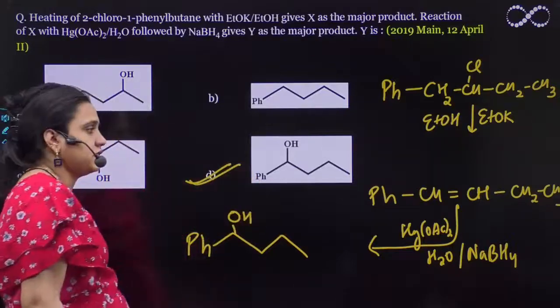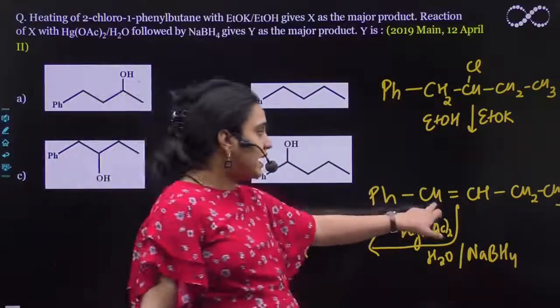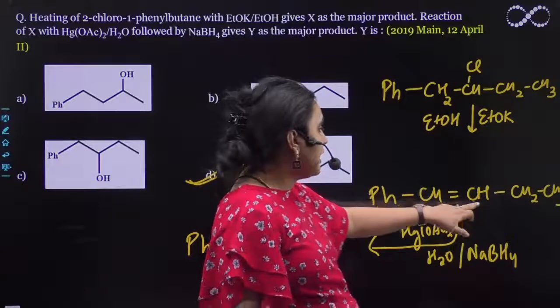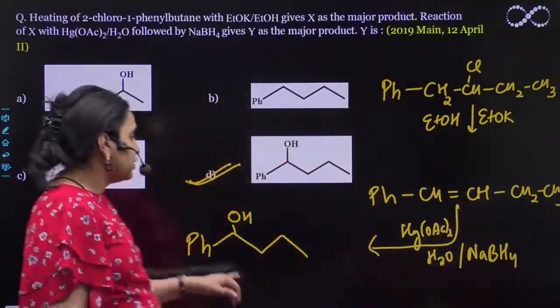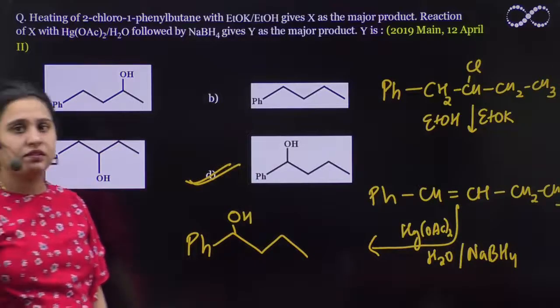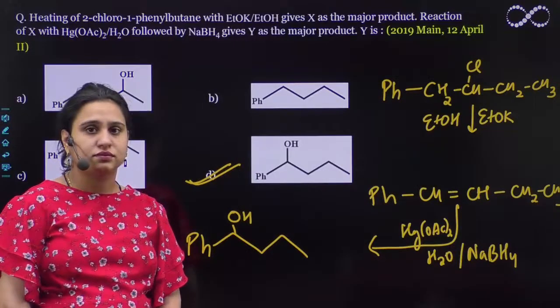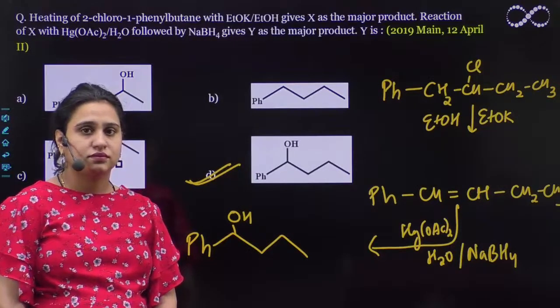The product will be option D. The OH will be on this side and the hydrogen will come on this side. So the product will be D. Thank you.